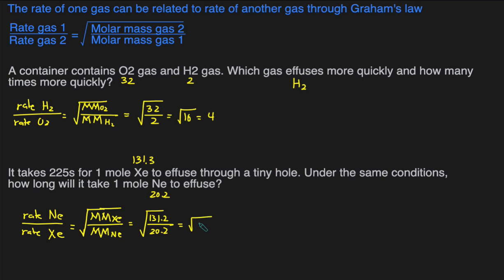So that would give us approximately square root of 6.5, which is approximately 2.55. That means that neon is going to diffuse 2.55 times more quickly than xenon. So if xenon took 225 seconds, then that means neon will be 2.55 times less than that. So it would be 225 divided by 2.55, which will equal 88.2 seconds. Let's double check if that makes sense. Xenon, which is heavier, effused through the hole in 225 seconds. Neon, which is significantly lighter, exited through the hole at 88.2 seconds.